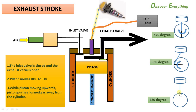This is the diesel engine working principle. For example, if the engine runs at 800 RPM, it completes 800 cycles per minute — meaning 400 complete 4-stroke cycles occur every minute.